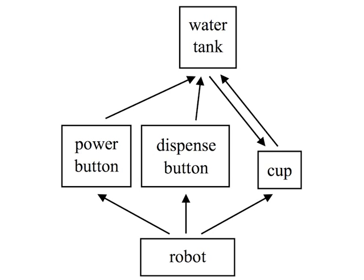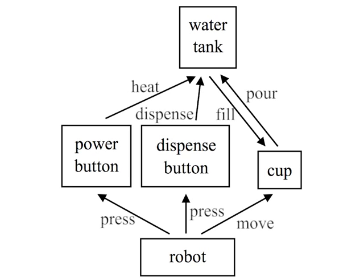Now we extend the model so that interactions are not organized in a chain. Consider using a water dispenser to heat water. The robot can press its power button and dispense button. It can also move the cup and pour water from the cup to the water tank on top of the dispenser. A graph is more suitable to model this scenario than a chain because some interactions, such as power button pressing and dispense button pressing, are parallel.